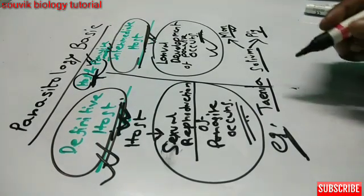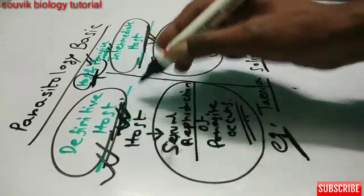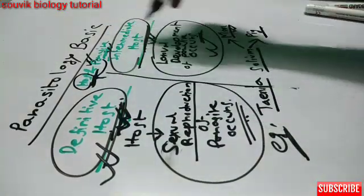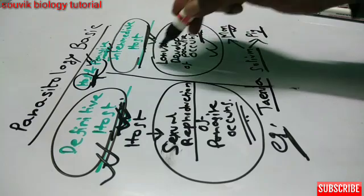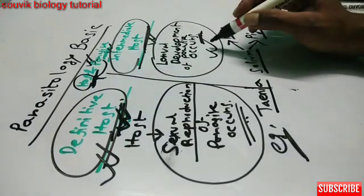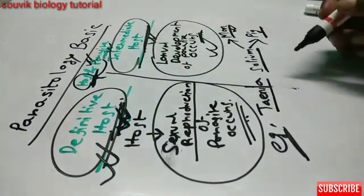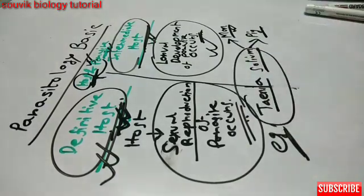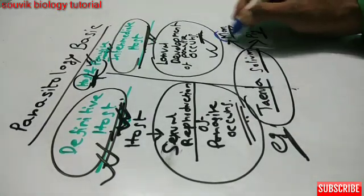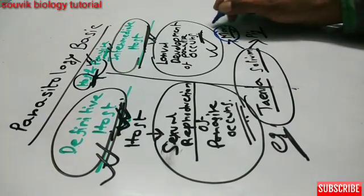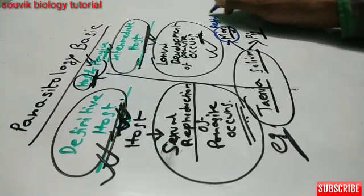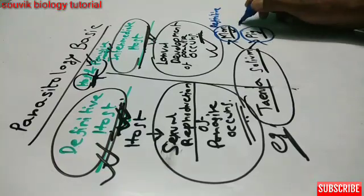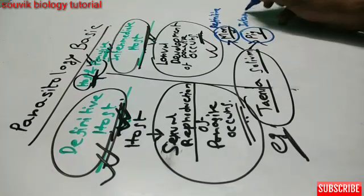I will again repeat. The definitive host is the host in which sexual reproduction of the parasite occurs. The intermediate host is the host in which the larval development of the parasite occurs. In the example of Taenia solium, man is the definitive host and pig is the intermediate host.